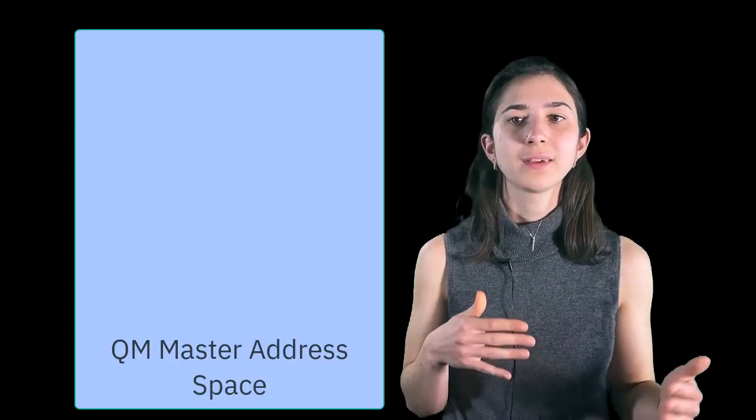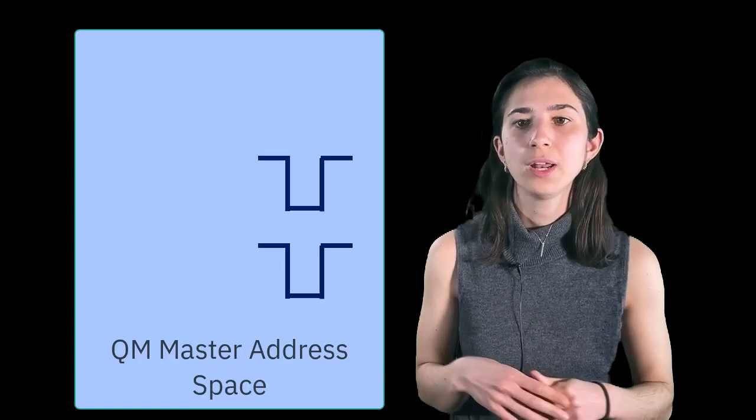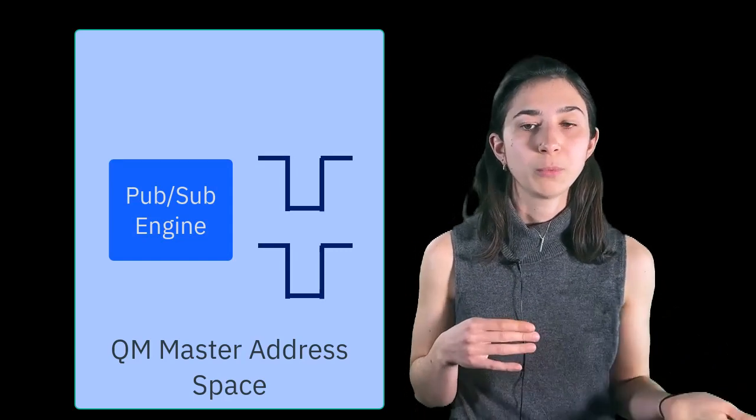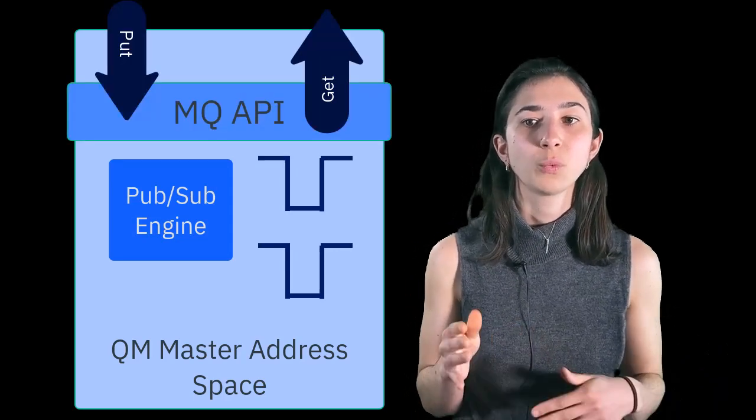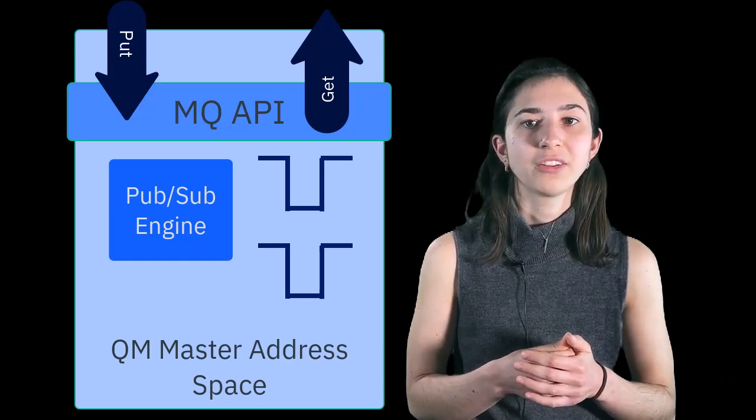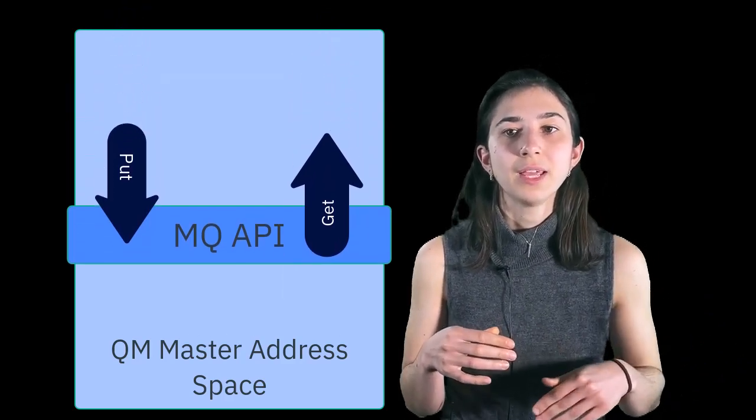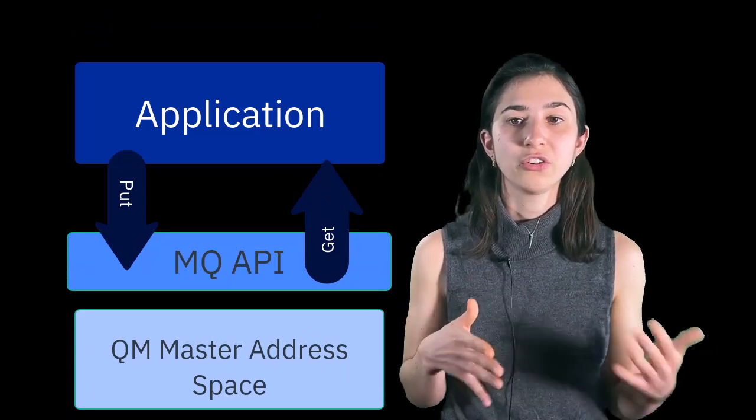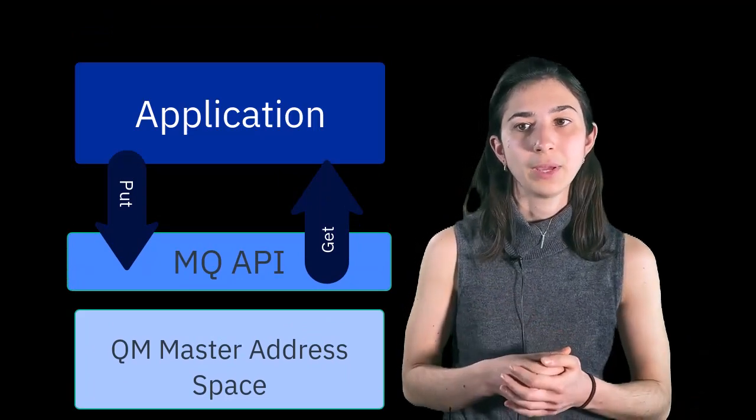The master address space comprises of a local queuing component, manages local subscriptions for the PubSub engine, as well as MQ API calls. The queue manager master address space interacts with connecting applications, so it understands how to implement MQ APIs.